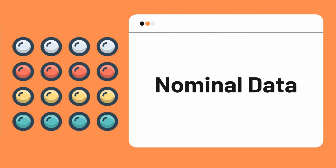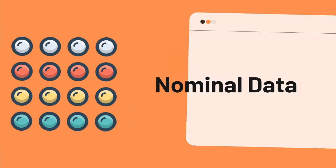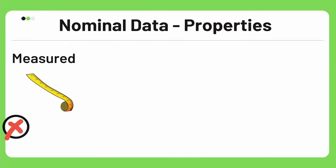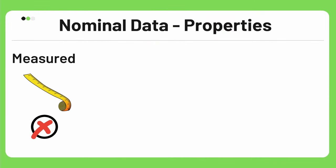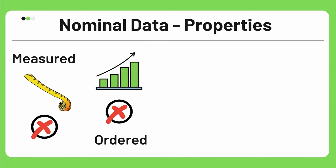Let's talk about nominal data and its four distinct properties. First, it cannot be measured in the form of numbers — for example, you cannot measure your hair color numerically. Second, it has no rank or order — for example, you cannot say that a person with black hair is better than a person with red hair.